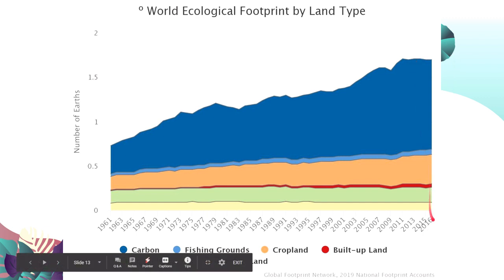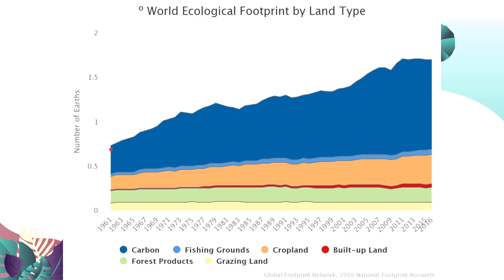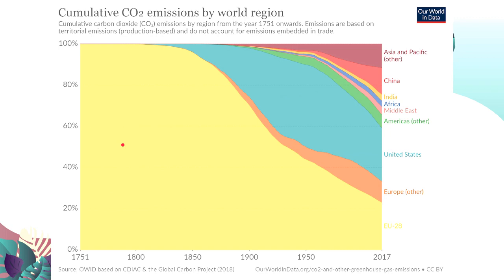From 1961 to 2016 — that's about four years ago when this data was compiled — our footprint grew from roughly 0.75 Earths to 1.5 Earths. That is the visualization of how much of the environment's products we have already consumed and utilized.